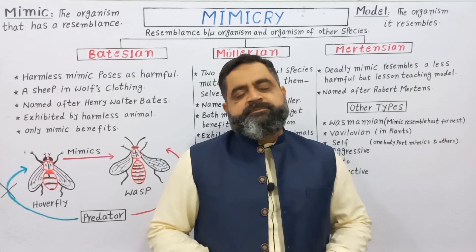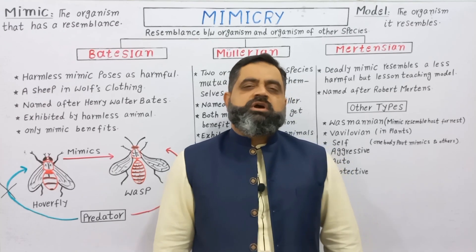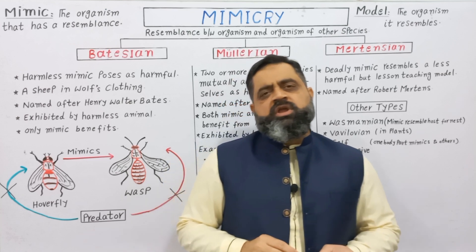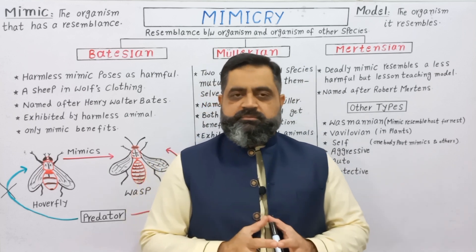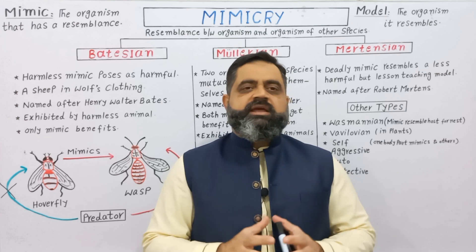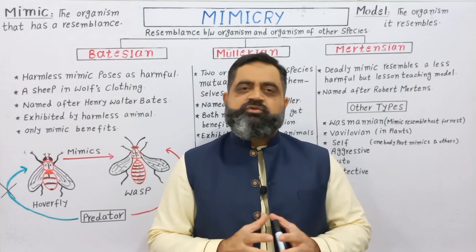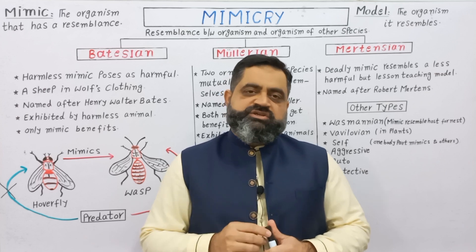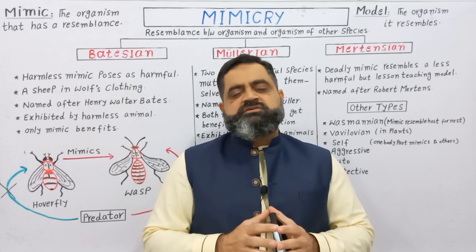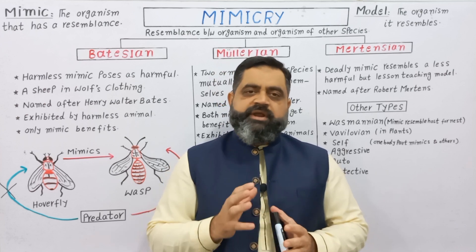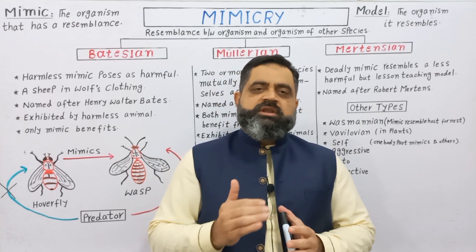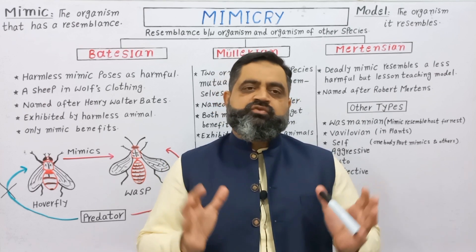To all students, in this video lecture we are going to discuss mimicry. As you know, in our animal kingdom and ecosystem, so many types of organisms, animals, and plants live together. There is a relationship known as predation, which has two components: predator and prey. Every animal tries to kill and eat other animals as part of the food chain.